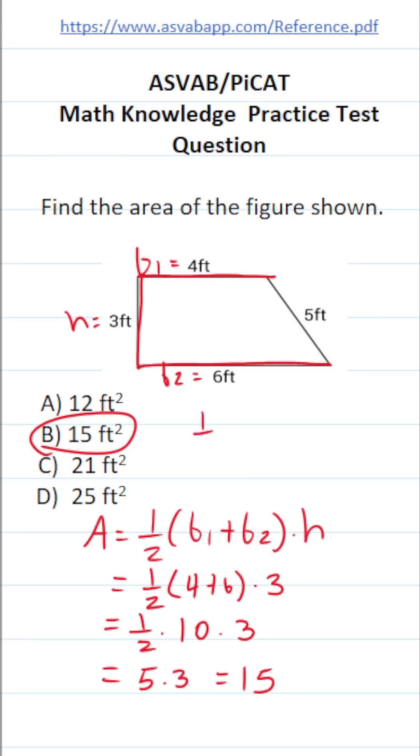If you couldn't do one half times 10 mentally, let me do it off to the side. You're going to write 10 as a fraction by placing it over 1 and multiply straight across. This becomes 1 times 10, which is 10, over 2 times 1, which is 2. 10 divided by 2 is 5.